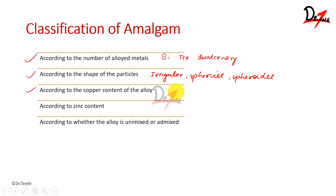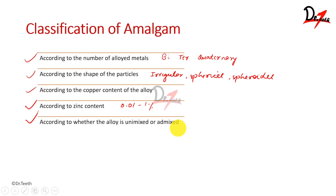High copper amalgam has 12–30 percent copper. According to zinc content, there are zinc-containing alloys (0.01–1 percent zinc) and zinc-free alloys (less than 0.01 percent — negligible). According to whether the alloy is unimixed or admixed: unimixed means the chemical composition of each particle is similar, while admixed alloys are a physical blend of different shapes, like lathe cut and spherical particles. Amalgam can be classified by number of metals, particle shape, copper content, zinc content, and unimixed vs. admixed.